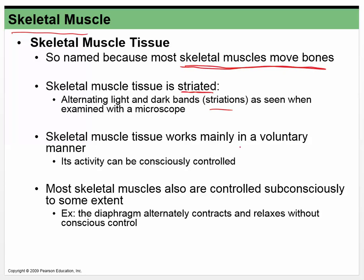Skeletal muscle works mainly in a voluntary manner — it can be consciously controlled. You're holding yourself in a certain posture without consciously thinking about all the muscles you're contracting, but if you want to change your posture, you can. Same thing with the diaphragm — you breathe all night without thinking about it, but if you decide to take a deep breath or blow air out, you can consciously control it.